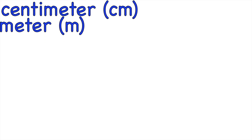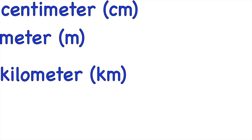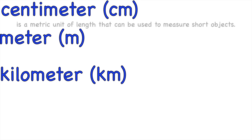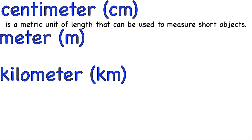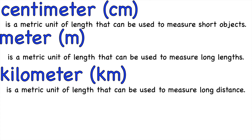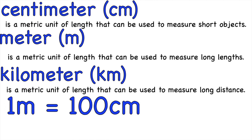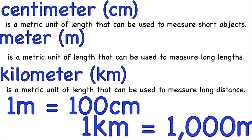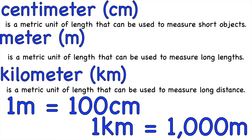Always remember, children, in measures of length we use three units: the centimeter or CM, the meter or M, and the kilometer or KM. Centimeter is a metric unit of length used to measure short objects. Meter is used to measure long lengths. Kilometer is used to measure long distances. In every one meter, we have 100 cm, and in every one kilometer, we have 1,000 meters.